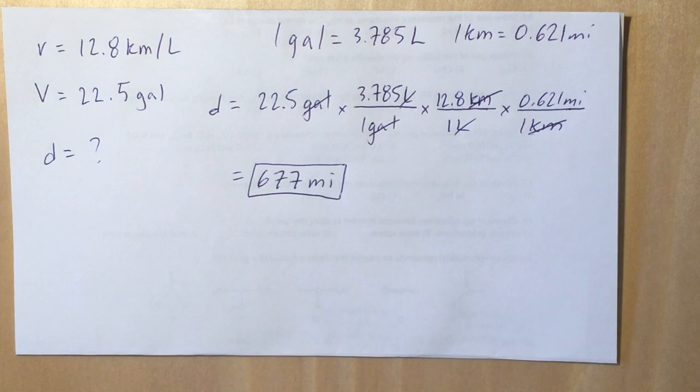So now we have to ask ourselves, well, the calculator gives me a bunch of numbers after the decimal. What is the number of sig figs? Well, I go and look at the constants given by the problem and I see that they both have three sig figs. So my answer has to go to three sig figs. So the final answer is going to be 677 miles.